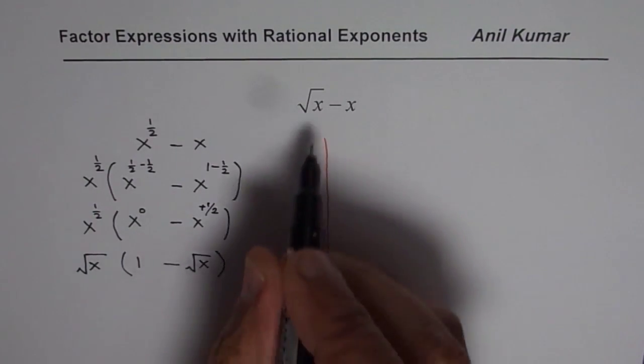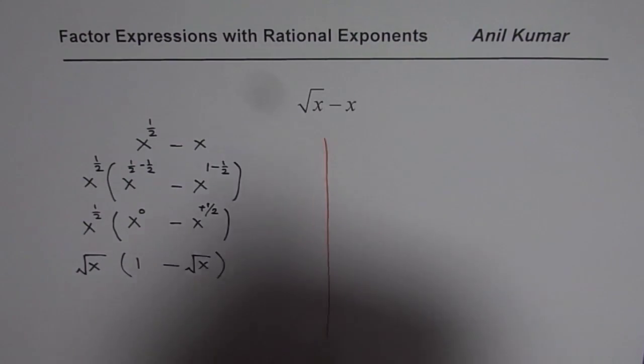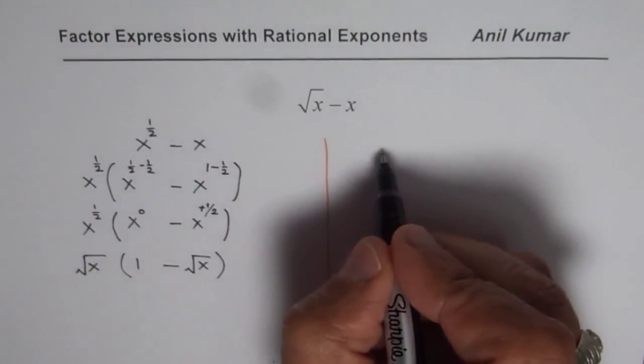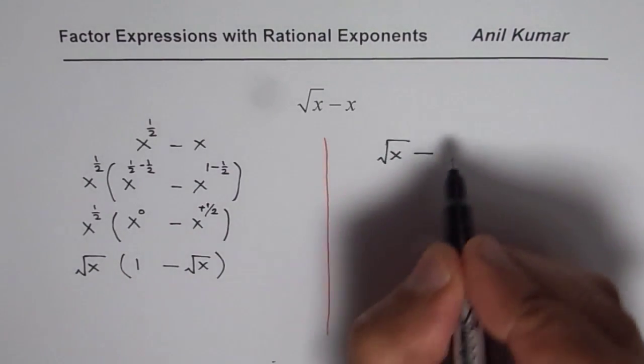So that is how you can factor the term. That's one way of doing it. The other way is you can think about this expression as √x - x, which could be written as √x × √x.